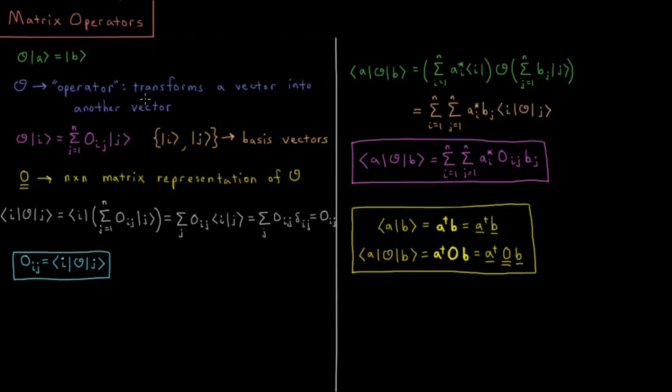This is the matrix analog of what we talk about in the quantum chemistry playlist as an operator as something that transforms a function into another function. Here the functions are represented as vectors and the operators will eventually be represented as matrices.